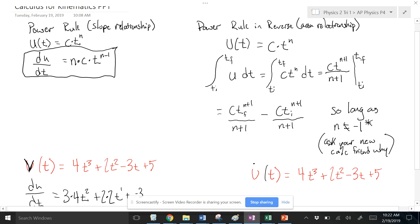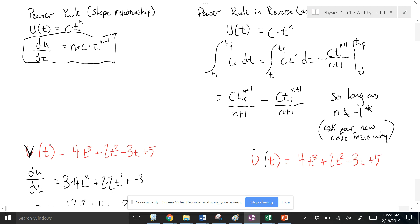Effectively, then, the derivative of this thing would be ct to the n. So I'm doing the antiderivative. I'm doing the opposite. And then I'm evaluating an area between two points in time.